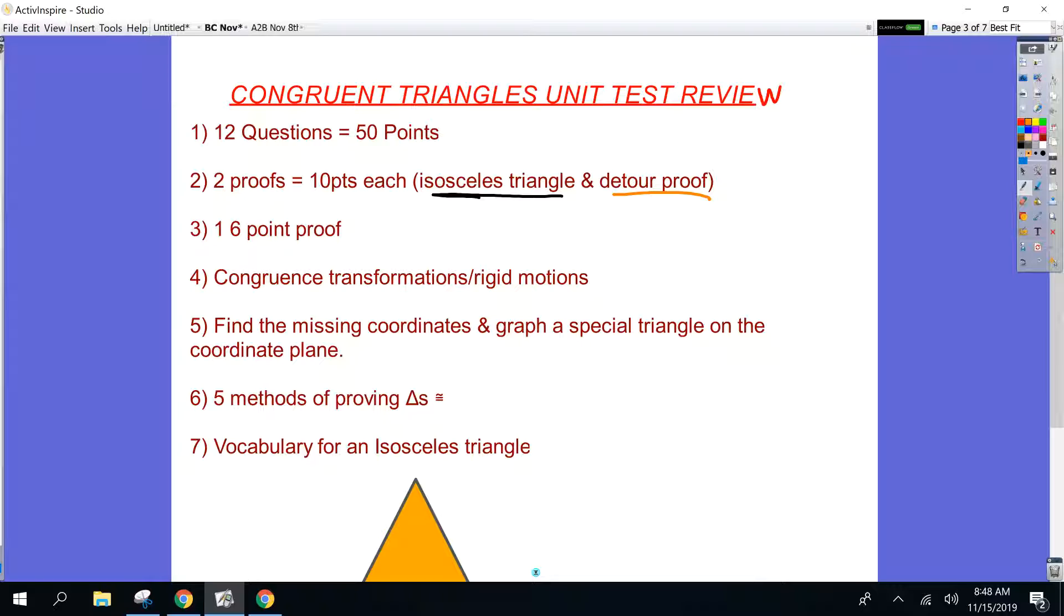Homework from two nights ago. Remember I gave you a triangle, and I had like zero comma question mark. You'll have one of those. That's what I mean by find the missing coordinates, and I will give you a description of a special triangle. So an isosceles triangle has a base length of 2a. Graph it for me. An equilateral triangle has a side length of 2a. Graph it for me. So isosceles, equilateral, right triangle. I could ask you to graph on your own with the proper coordinates.